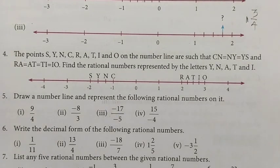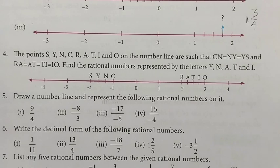S, Y, N, C, R, A, T, I, O are on the number line such that C, N, N, Y, Y, S — find the rational numbers represented by Y, N, A, T, I.